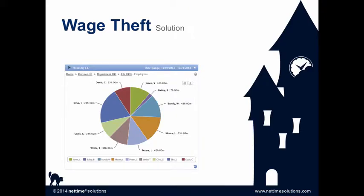What does a time and attendance solution do to stop wage theft? First, it builds trust between an employer and its employees. An employee who clocks in and out via a biometric time clock can feel confident that his or her time has been recorded accurately. If a supervisor with administrative access altered the time card, there would be an audit trail indicating precisely when and where any alterations were made. With pre-configured pay policies, employees are automatically paid the appropriate amount based on the time they worked, so there's never a question of whether an employee qualifies for time-and-a-half or double time.